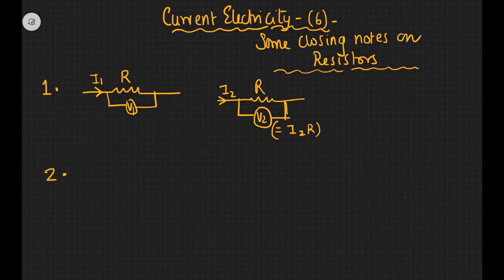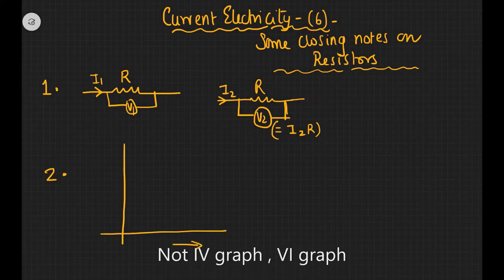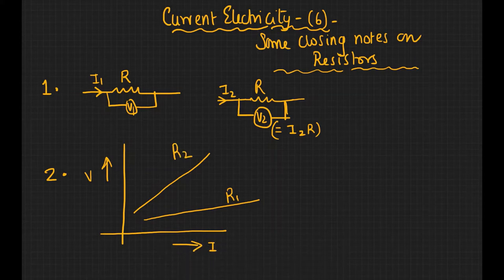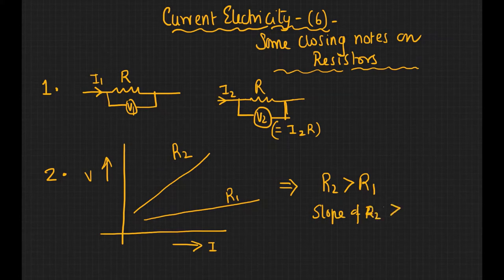The second thing is if you have an I-V graph. If you have two lines for two different resistors R1 and R2, you can infer from this that R2 would be greater than R1, because the slope of R2 is greater than...